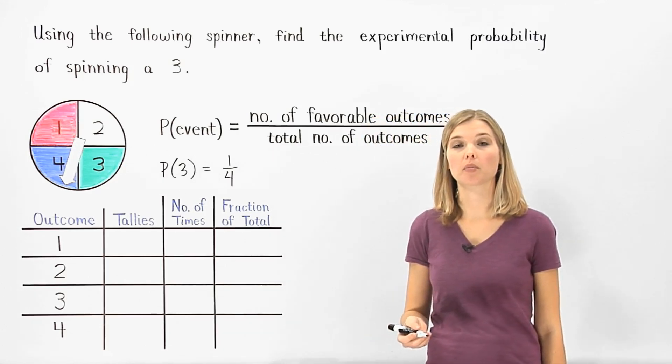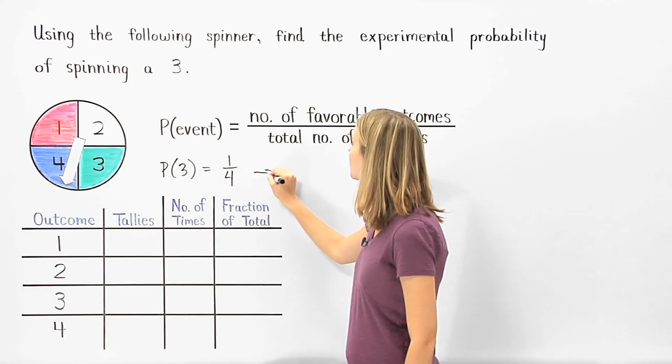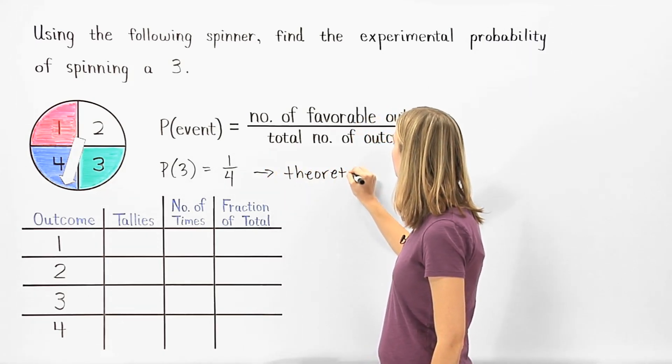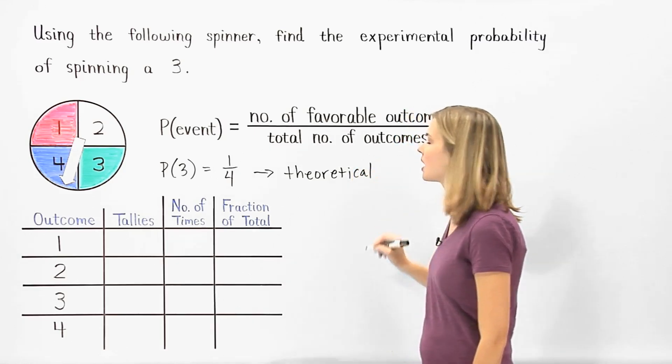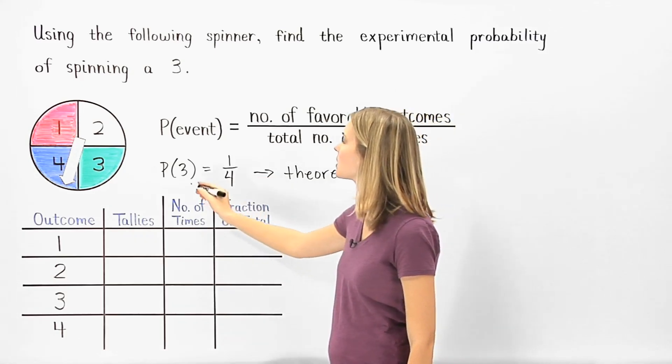Since we found this probability without actually spinning the spinner, it's called the theoretical probability. In other words, in theory, there's a 1 in 4 chance that we'll spin a 3.